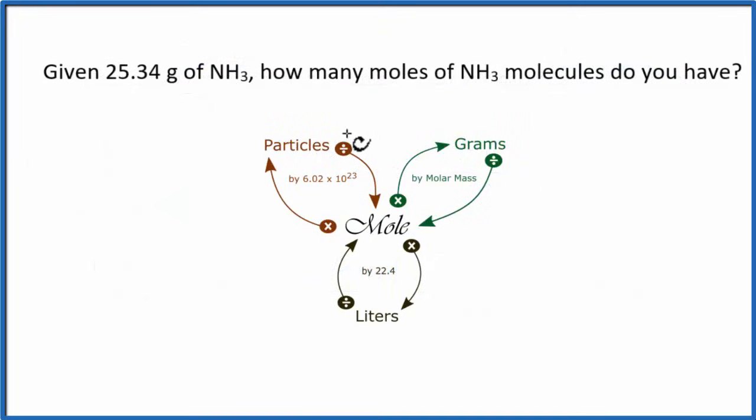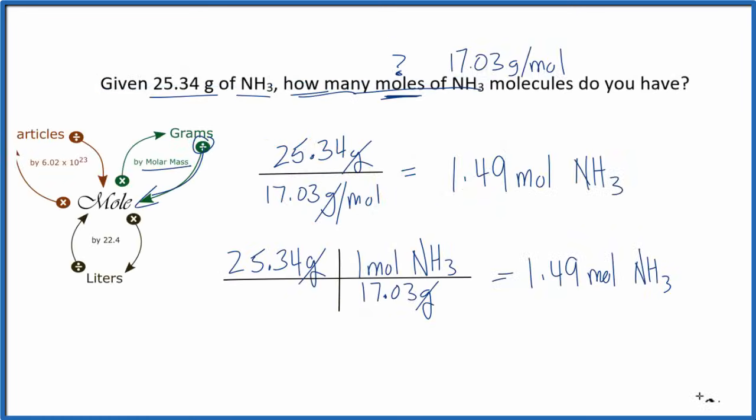This is another one where it's worded a little bit tricky. We know we have grams. That's what we're given of ammonia, NH3. We want to know how many moles, how many moles of NH3 molecules do we have. They're not asking how many molecules we have in this many grams. They're asking how many moles of NH3 molecules. So we're looking for moles. We go from grams to moles, divide by the molar mass. Here's how I set it up. And that's it for this one.